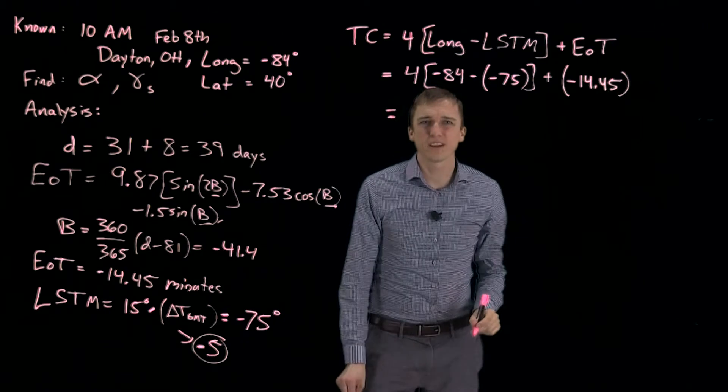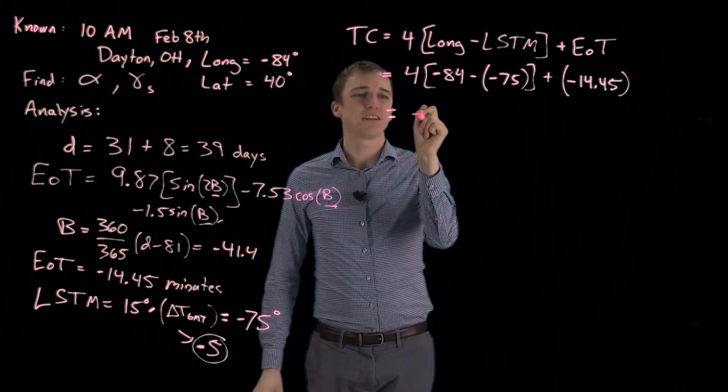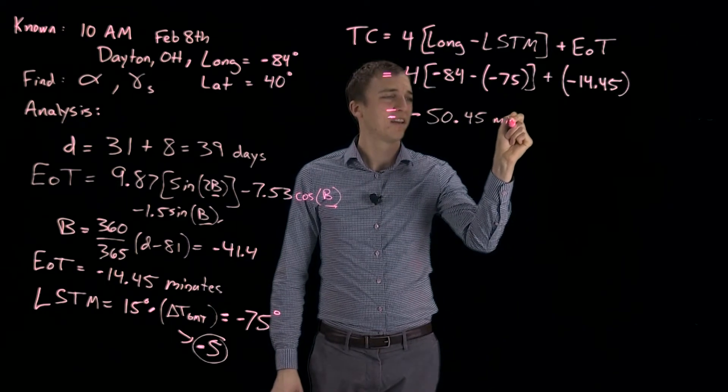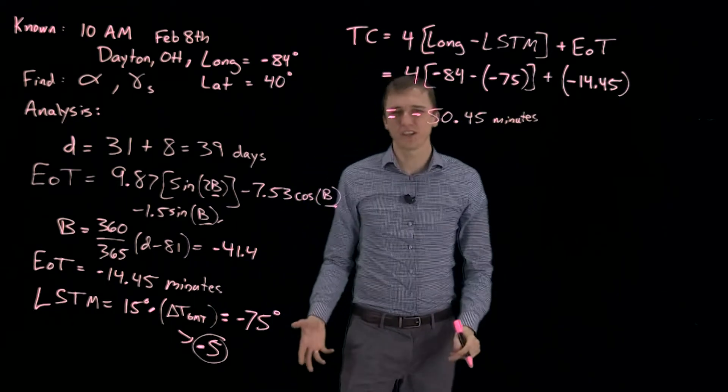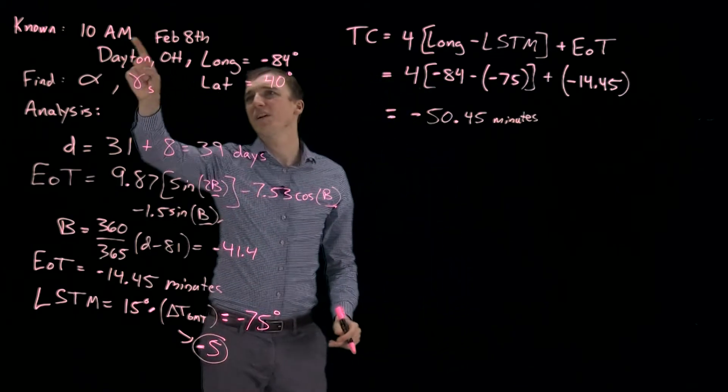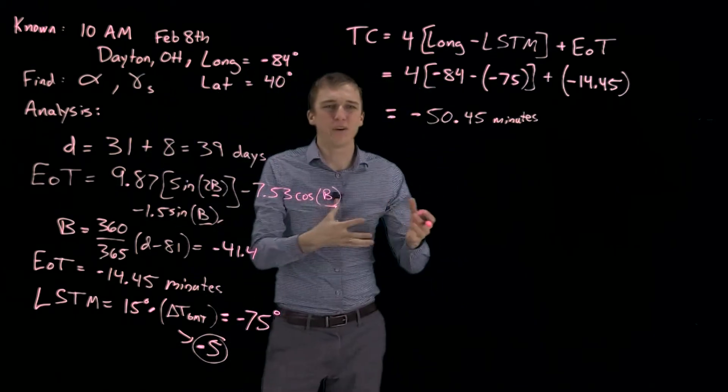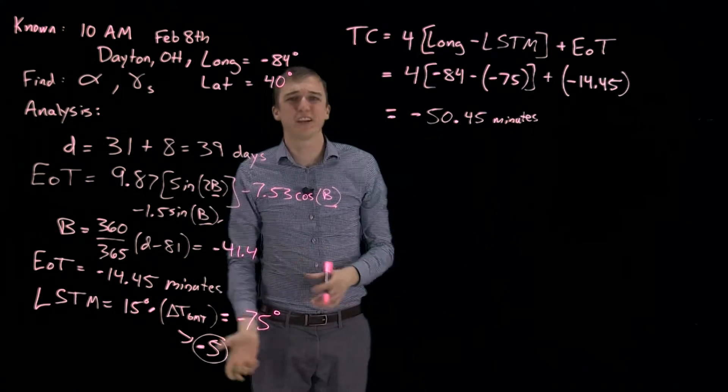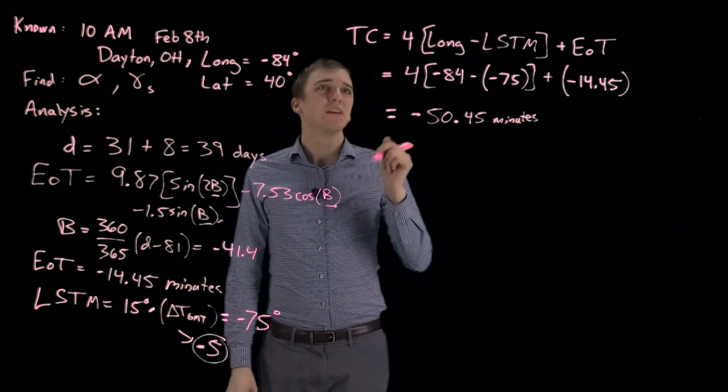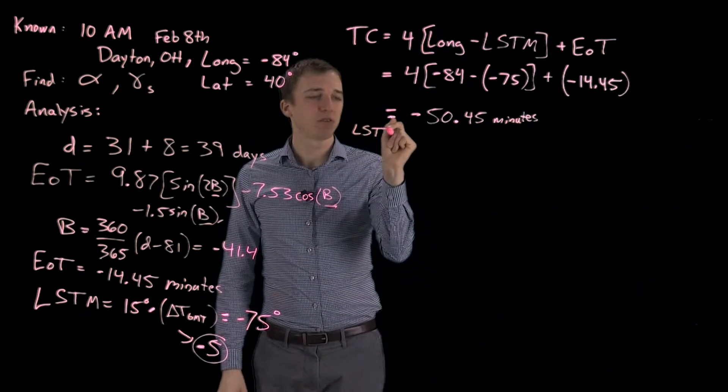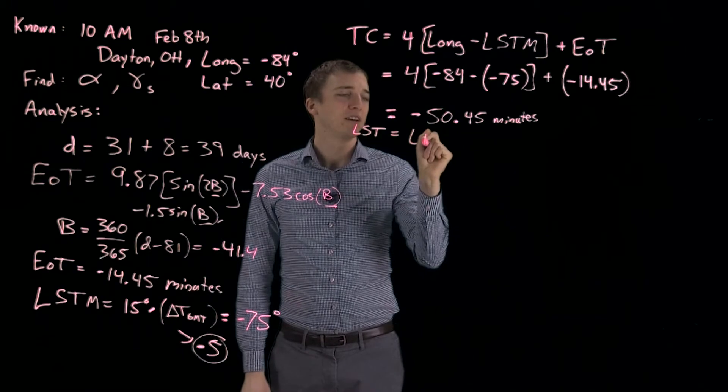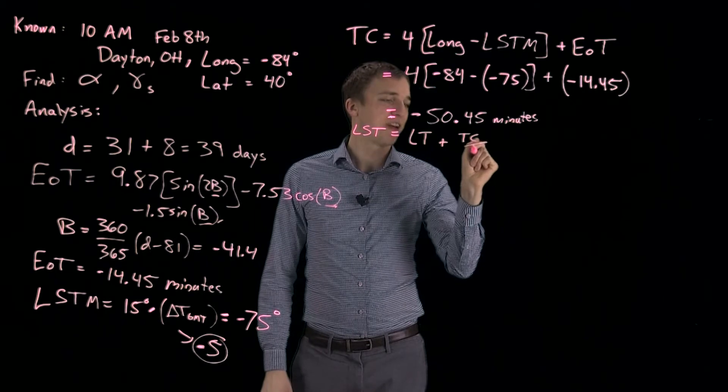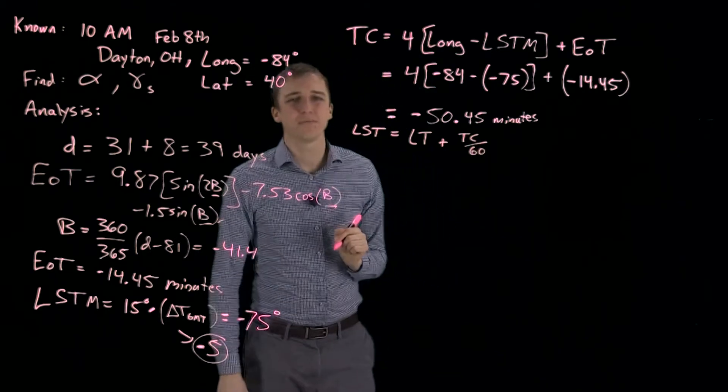Okay. So plugging all of that in, we get minus 50.45 minutes. Again, this is a correction to time, accounting for that day of the year and how we need to adjust our current time based on what has happened, whether it's mankind variations or natural variations. We are now ready to find the local solar time, which is our local time, 10 a.m., plus our time correction factor divided by 60.